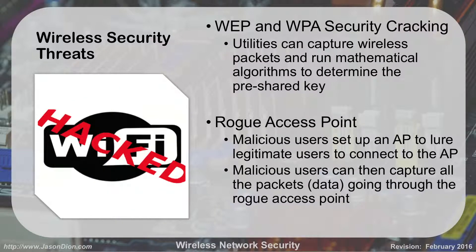Wireless threats: the two big threats we'll talk about are WEP and WPA security cracking. WEP was first and WPA was second — the original forms of wireless network encryption. If you have an insecure algorithm, it can be cracked and someone can get on your network even though you have encryption. Both WEP and WPA have flaws and have been cracked. No matter what your password is, someone can get in. Don't use WEP; don't use WPA. You should be using WPA2. There are utilities that capture wireless packets, run them against a mathematical formula, and determine the key because it's a weak algorithm.